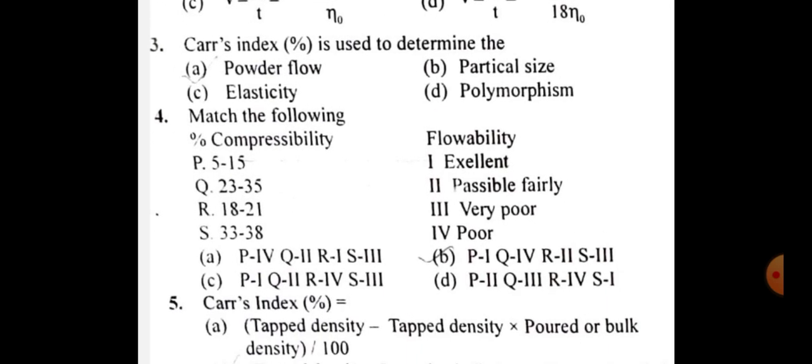Carr's index, which is in percentage, is used to determine powder flow. You need to match the percent compressibility with the flowability. If it is 5 to 15%, then flow is excellent.